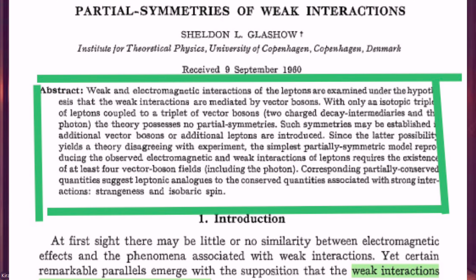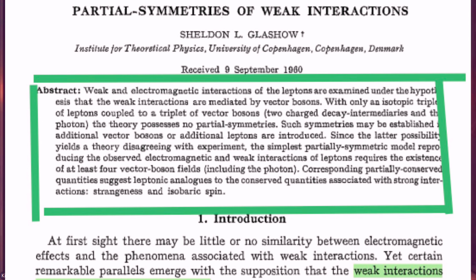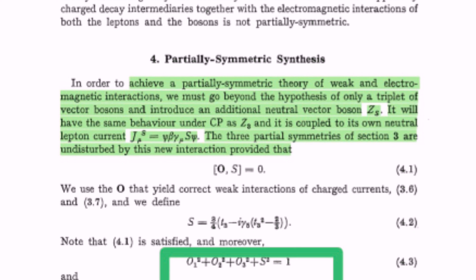Now let's talk about Glashow's 1961 paper. In terms of major contributions, this paper proposed a concrete model that unified the weak and electromagnetic interactions using the SU(2) × U(1) gauge symmetry. This was a significant step forward from the more abstract and conceptual work of Salam and Ward. Glashow's model also predicted the existence of W and Z bosons, which are the carriers of the weak force — a clear, testable outcome that could be investigated experimentally.